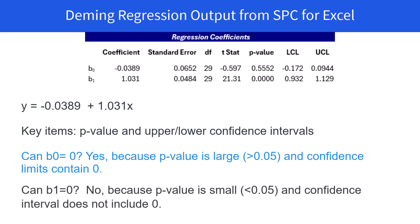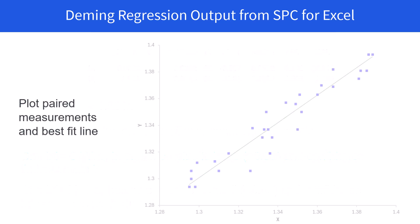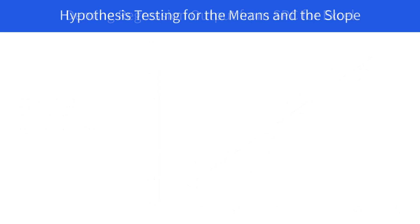Can B1 equal 0? No, because the p-value is small and the confidence limit does not include 0. So we can plot the paired measurements along the best fit line. You can see these points are close to the green line on the chart. That means that these two test methods are probably comparable.